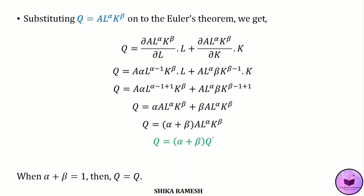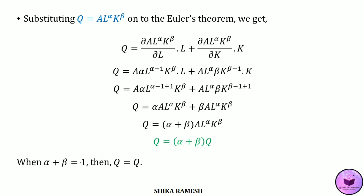This shows that when alpha plus beta equals 1, Q equals Q. That is, when all factor inputs are paid rewards equal to their marginal products, the total output will get exhausted. And since alpha plus beta equals 1, this production function clearly implies constant returns to scale.